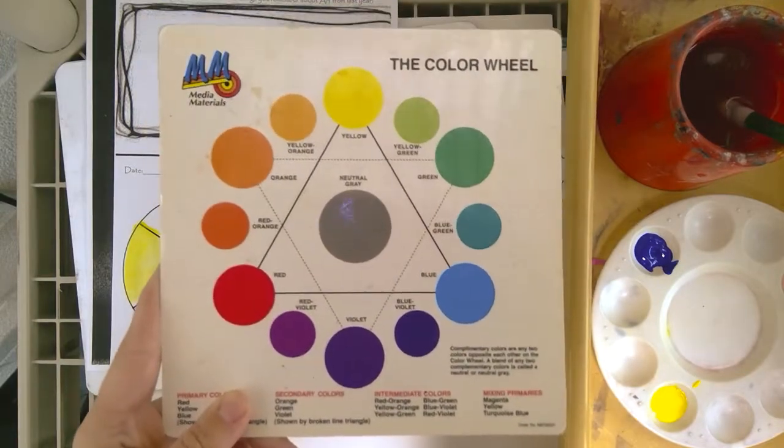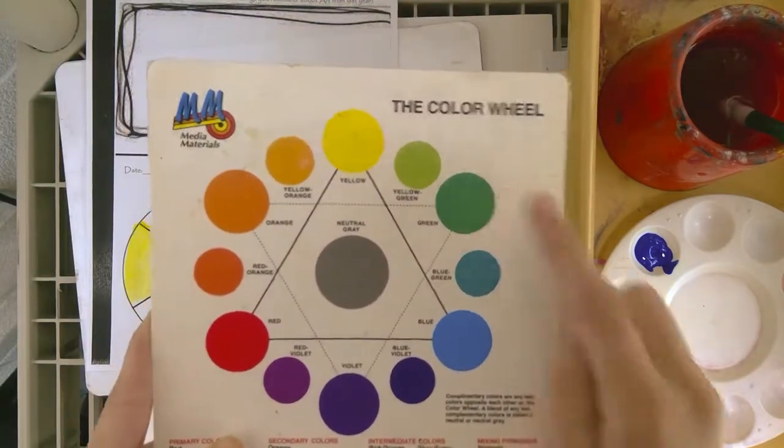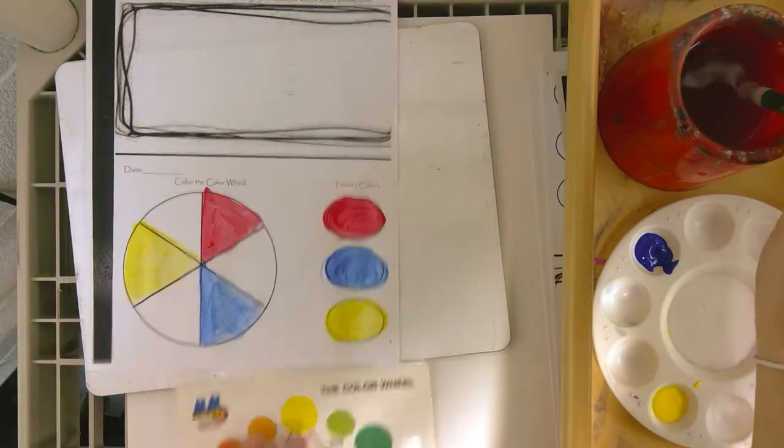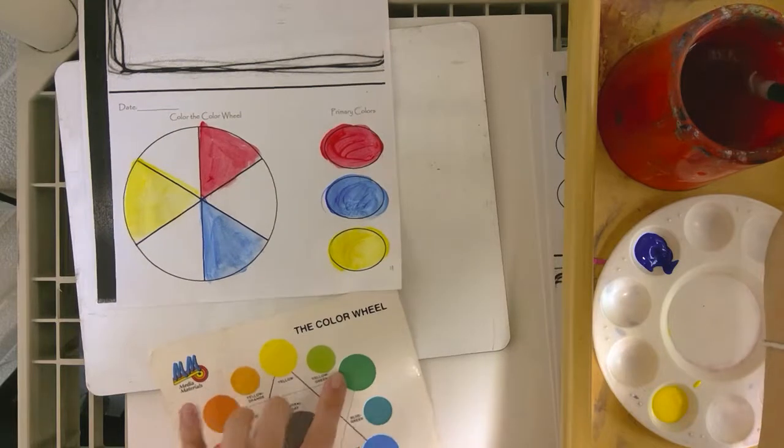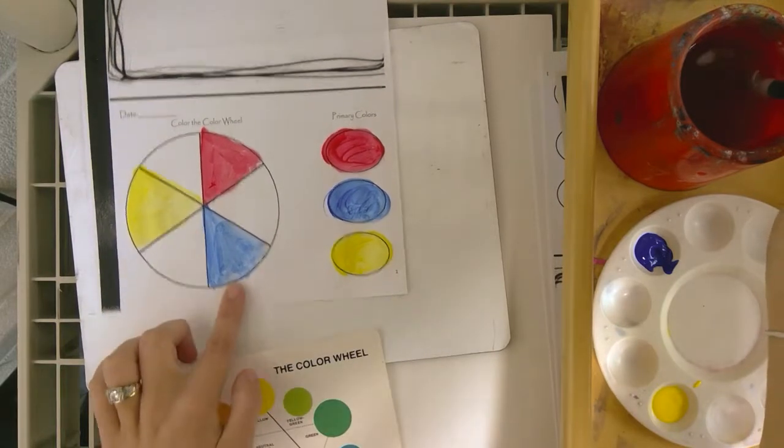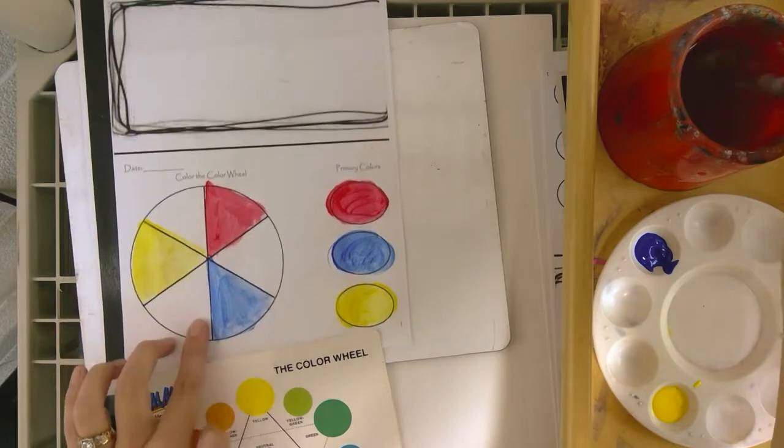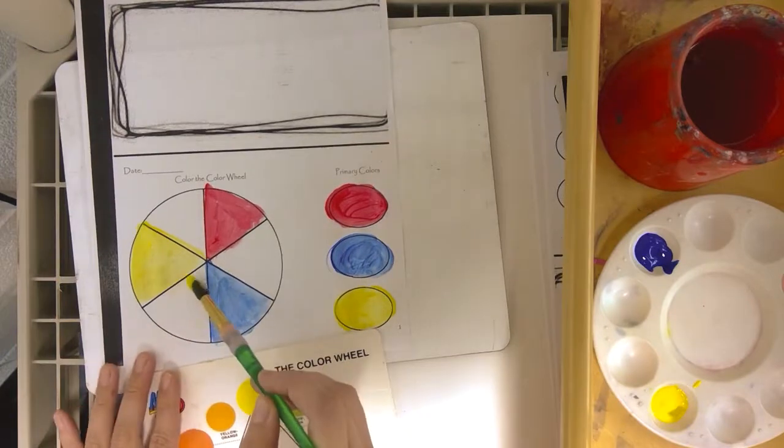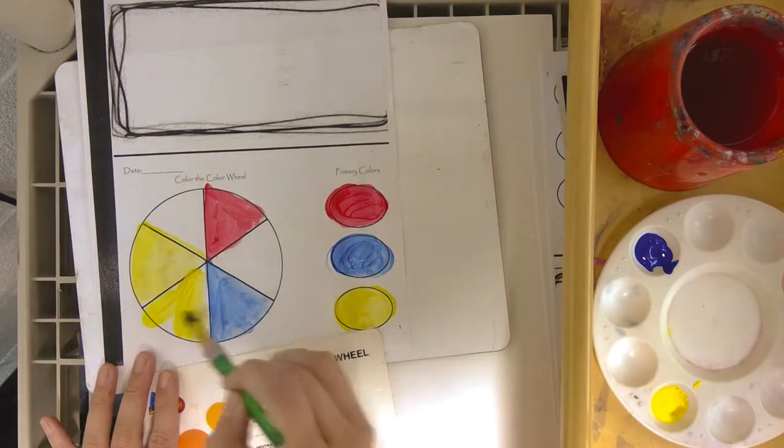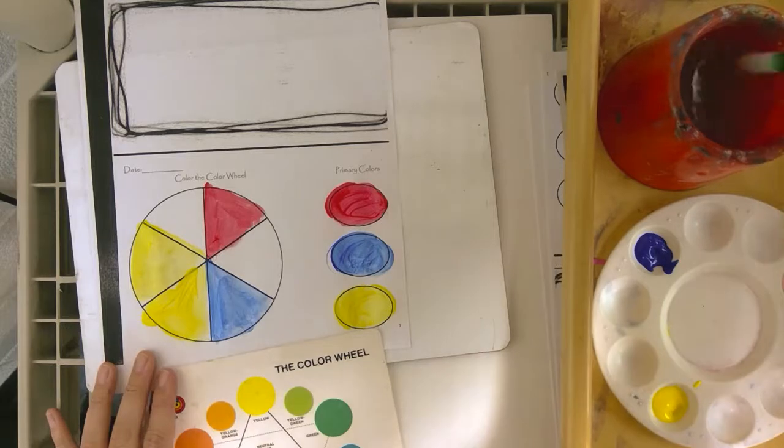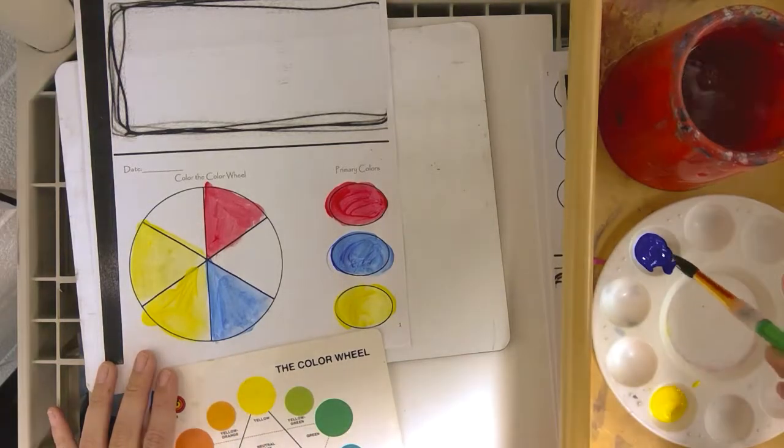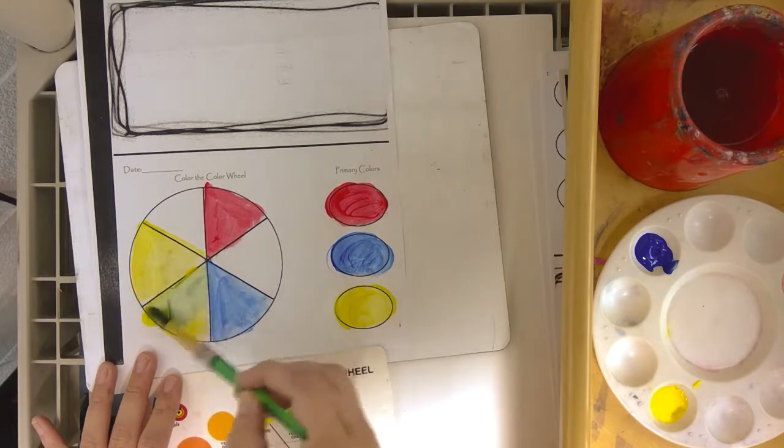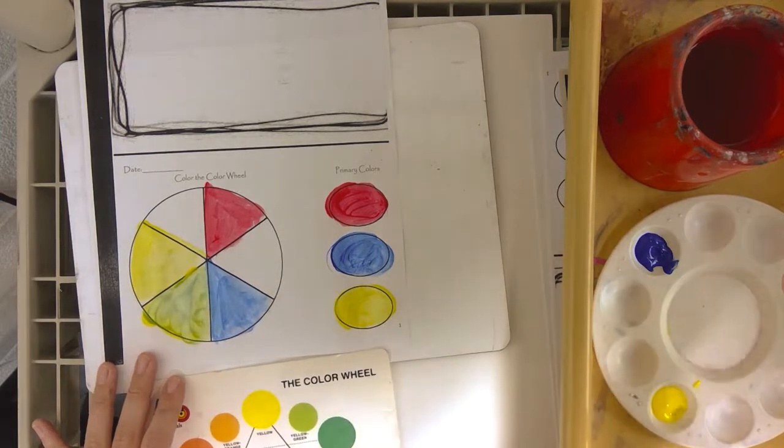Can anybody guess how to make the color green? That's right. If we look here, in between green is yellow and blue. So yellow and blue equals green. So I'm going to take a lot of my yellow, put it in between my yellow and blue. I'm going to rinse my brush off and I'm going to just take a little bit of blue to make my green. And that's how you make green.